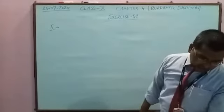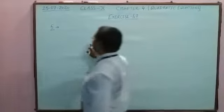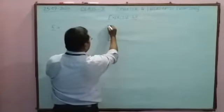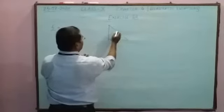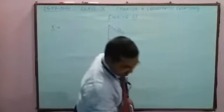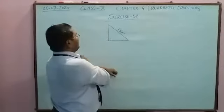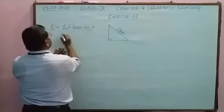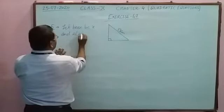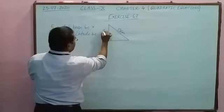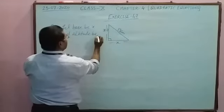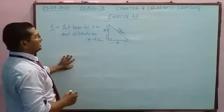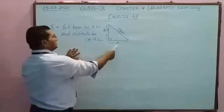This is a right angle triangle with a 90 degree angle. The hypotenuse is 13 cm. We take the base as x, and since the altitude is 7 cm less than the base, the altitude is x minus 7. So base = x and altitude = x − 7 cm.